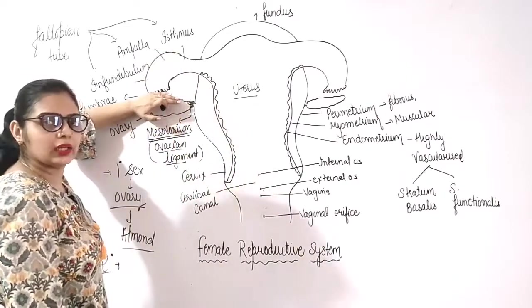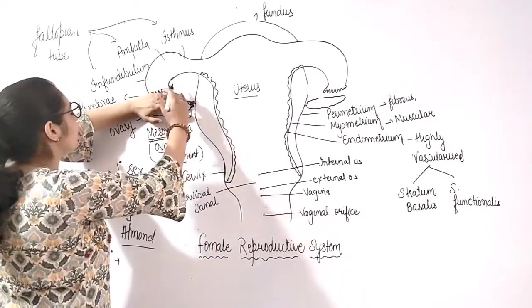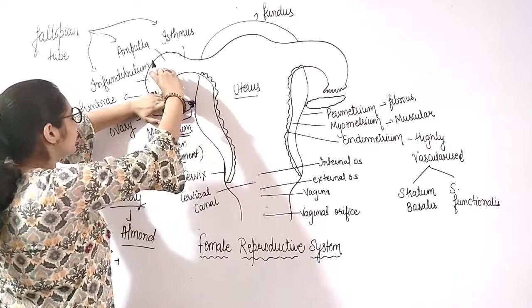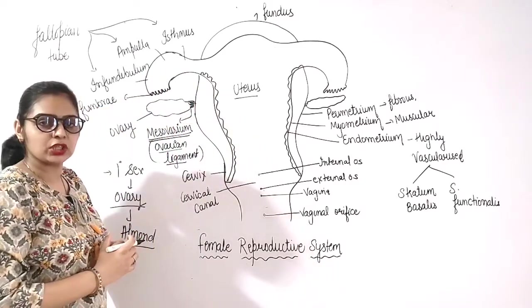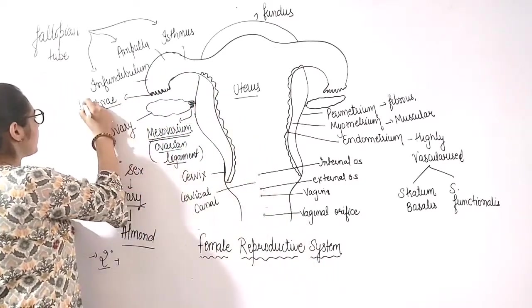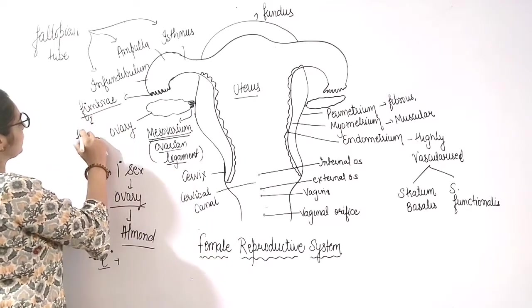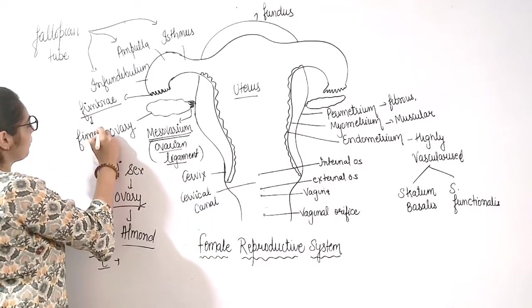The next structure that starts is the fallopian tube. The ovary and fallopian tube are present in a mesentery. And they are known as fimbriae. What is fimbriae? They are the finger-like projections.